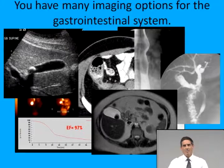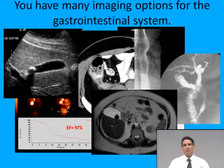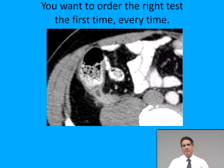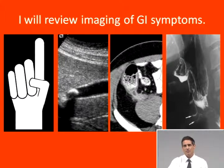You have a lot of options for imaging the gastrointestinal system: ultrasound, CT, fluoroscopy with contrast material, MR, nuclear medicine. How do you know which test to order? There's also the related problem of what to do with the results once the test is done. You want to order the right test the first time every time — that will allow you to take the best care of your patients and make the best use of scarce medical resources. My job here is to go over four main points in the imaging of GI symptoms to help you order the correct first test.